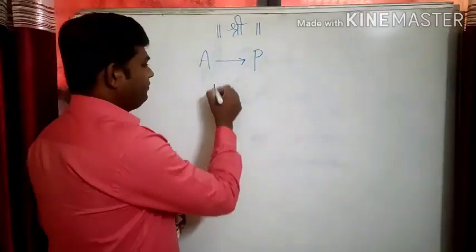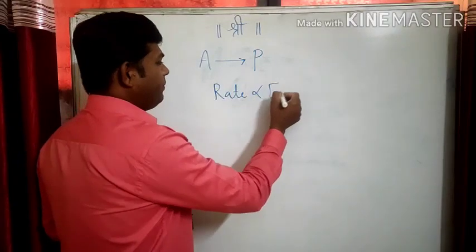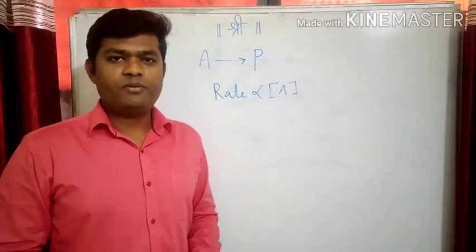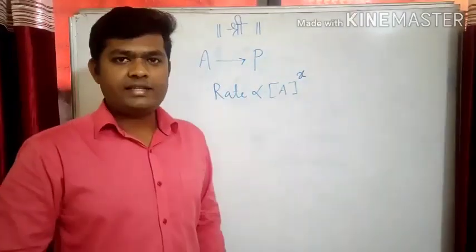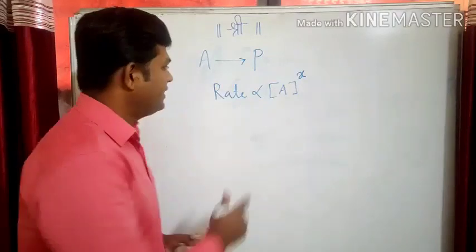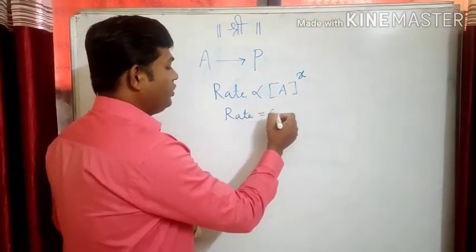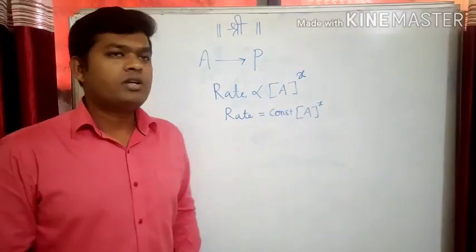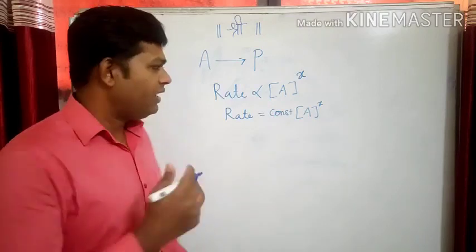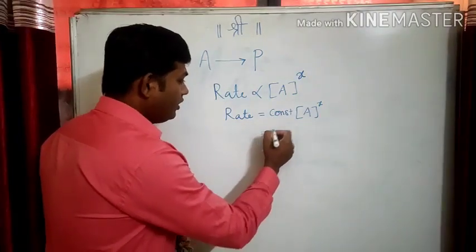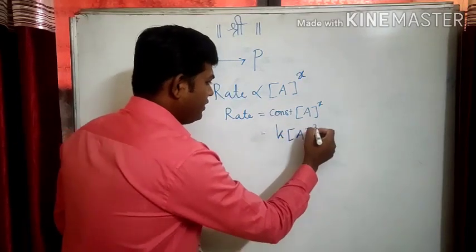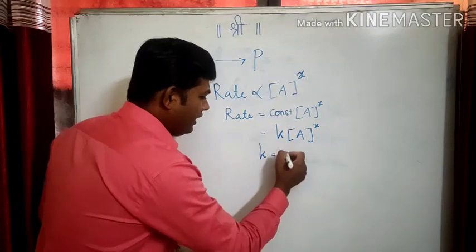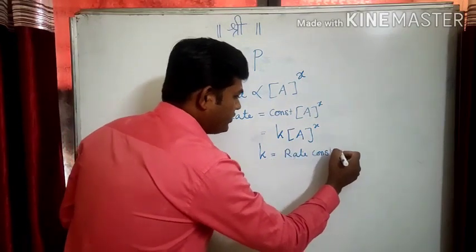The rate of the reaction can be written like this: rate is directly proportional to the concentration of reactant A to the power x. This equation is written as rate is equal to constant times the concentration of reactant A to the power x. This constant is nothing but small k, and this small k is known as the rate constant.